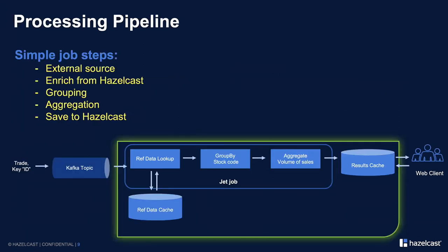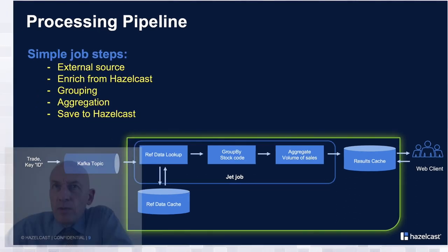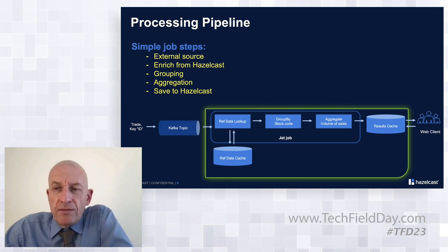In Hazelcast, our stream processor is essentially a pipeline — similar to a Unix pipeline where each step passes data to the next. We read from a Kafka topic, do a reference data lookup to check the stock symbol isn't in bankrupt status, then do grouping by stock symbol, then aggregation to calculate trading volume, and finally store the results back into Hazelcast for the web client.